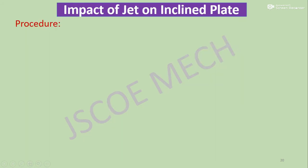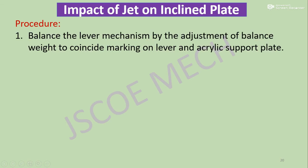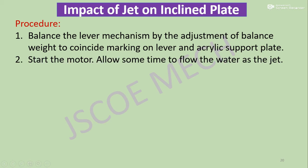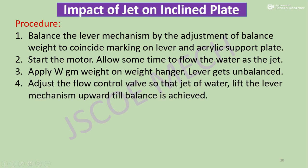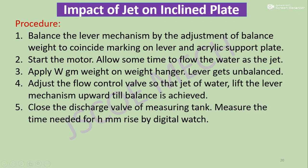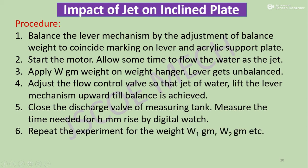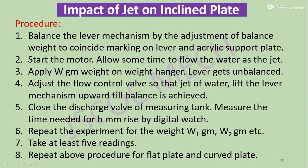We will first perform the test on impact of jet on the inclined plate. The procedure is: first, balance the lever mechanism by adjusting the balance weight to coincide with the marking on the lever and acrylic support plate. Then start the motor and allow discharge of water as a jet. Apply the first weight in grams to the hanger so the lever becomes unbalanced, then bring it back to balanced condition by adjusting the flow control valve. Close the discharge valve of the measuring tank and measure the time needed for h mm rise using a watch. Repeat this for different weights; the procedure is the same for flat plate and curved plate.